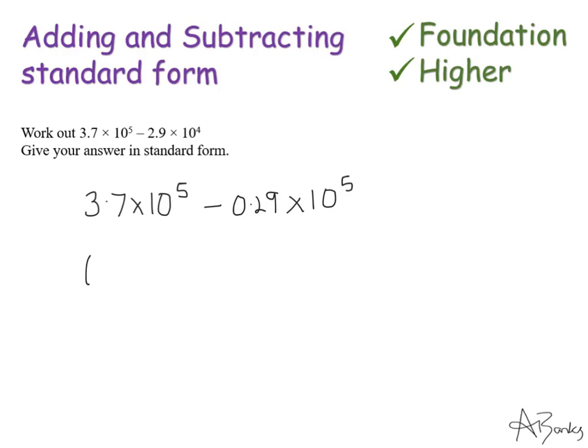So I'm going to do 3.7 take away 0.29. And the answer is going to be whatever that is times 10 to the 5. So 3.7 take away 0.29 is 3.41 times 10 to the power of 5. And that's my answer.